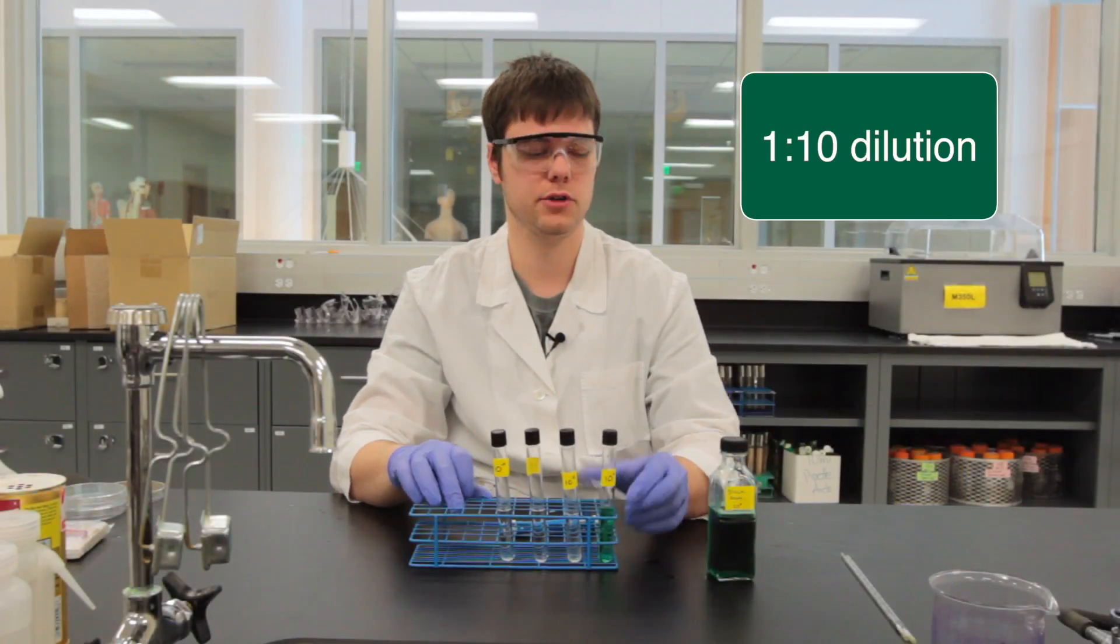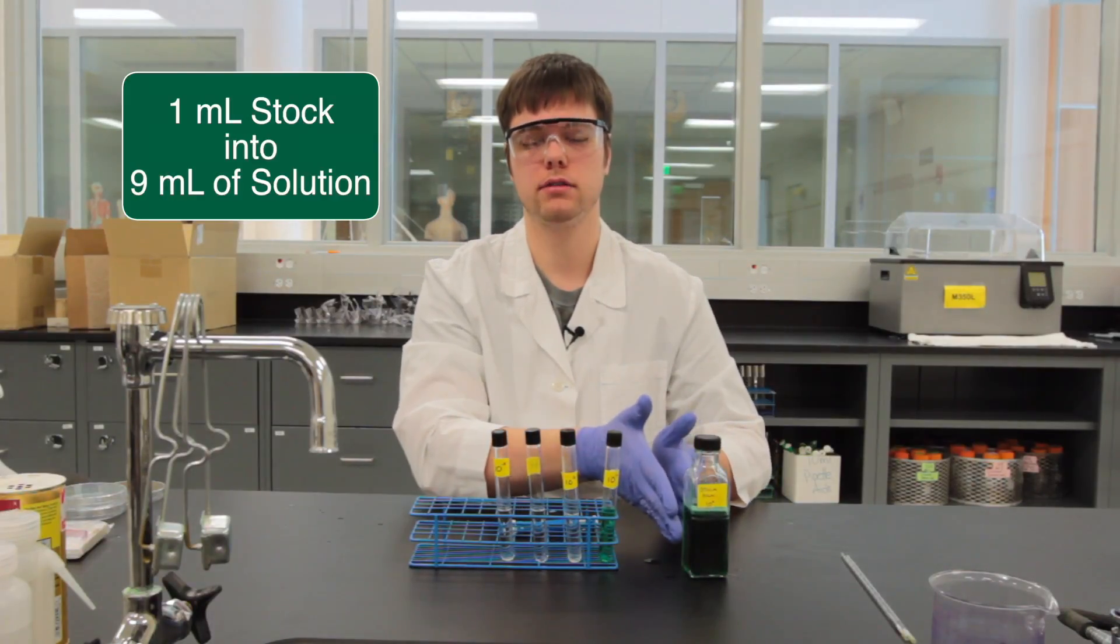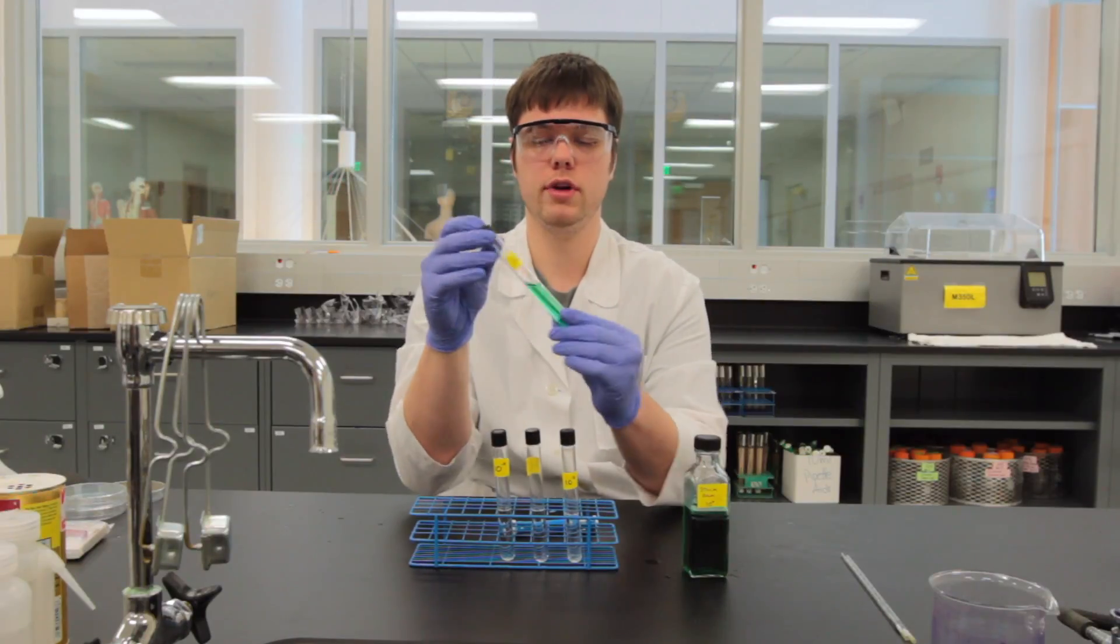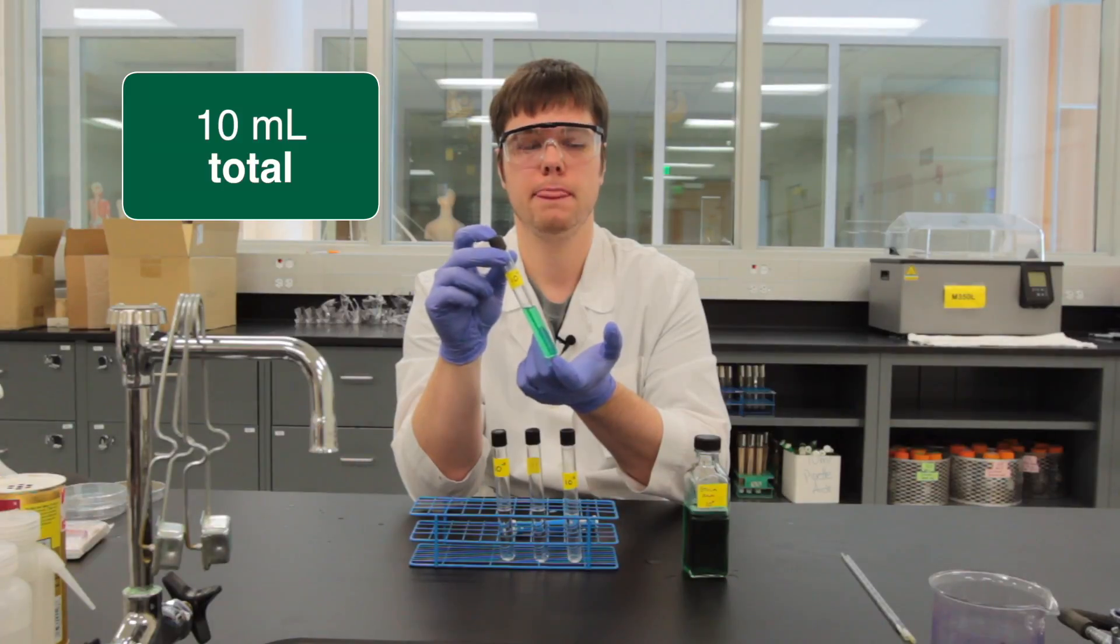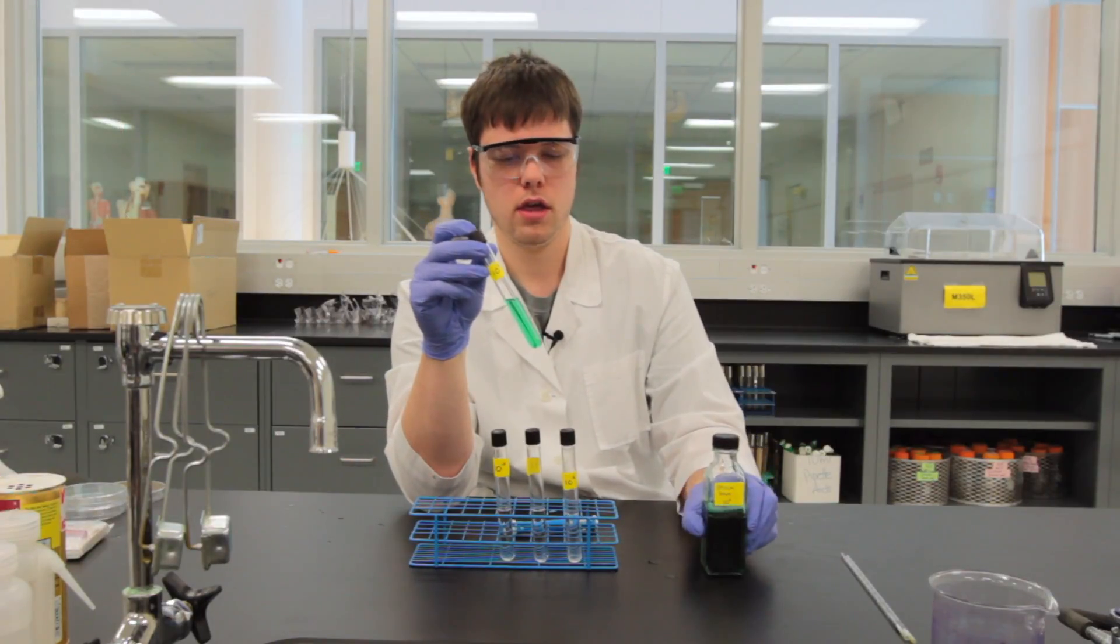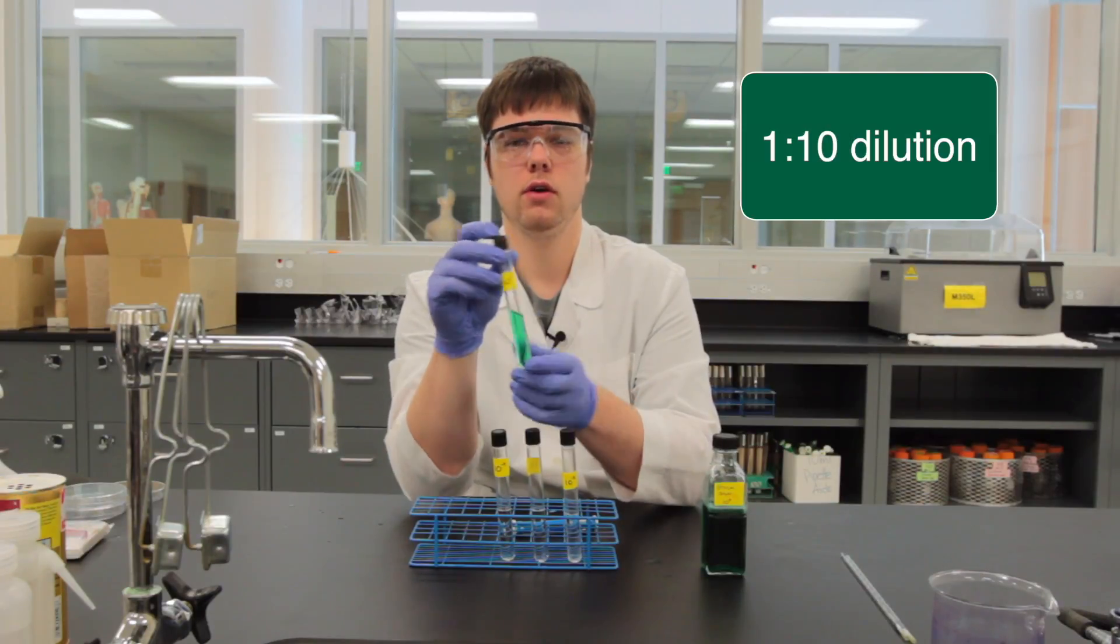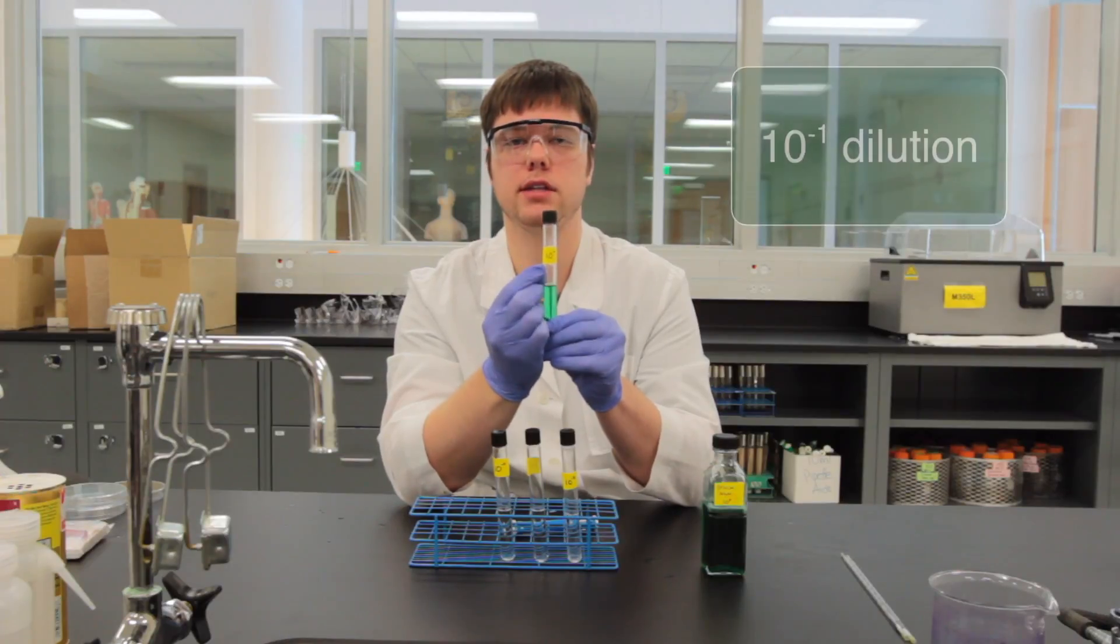Now this is a 1 to 10 dilution because we're taking 1 mil from our stock bottle and placing it into 9 mils of solution. So in this vial, we have a total of 10 mils. We have 1 mil of our stock in a total of 10 mils, so 1 out of 10, a 1 to 10 dilution, or for those who prefer to work in exponents, 10 to the negative 1.